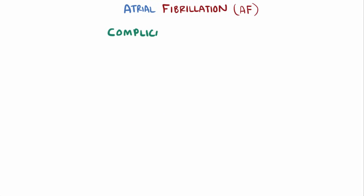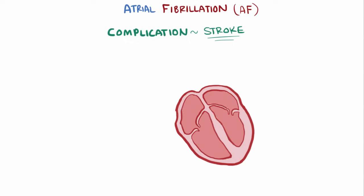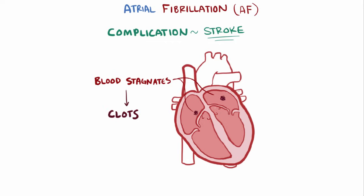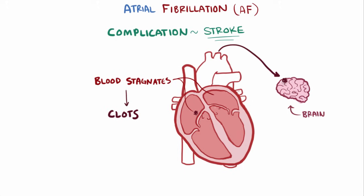One potential complication of AF is stroke. When the atria don't contract as a single unit but just sort of quiver, the blood that sits in the atria becomes more stagnant. When blood stays still, it tends to form clots. With AF, it's possible that blood clots form, which then travel into the ventricle and are pumped off to the body — and potentially to the brain — where they can lodge. This cuts off blood flow to that part of the brain, which is a type of stroke.